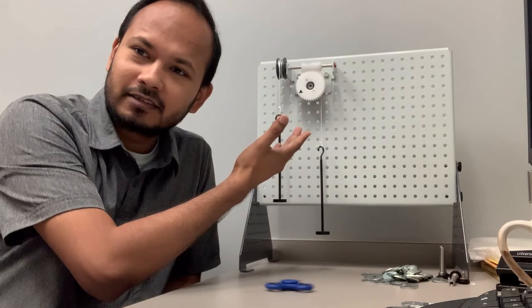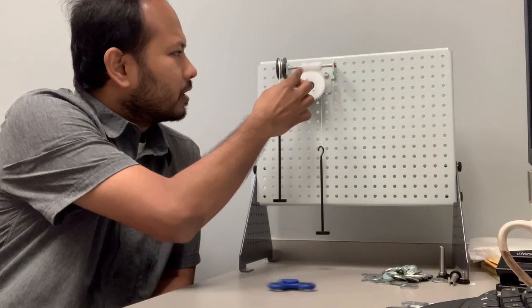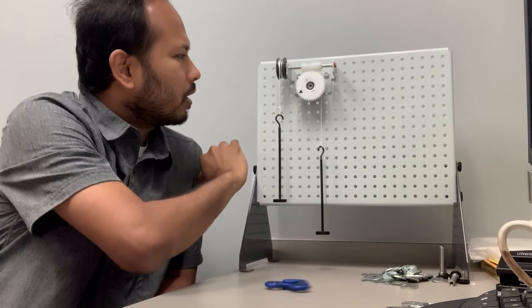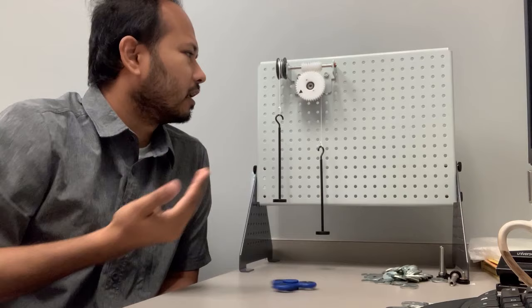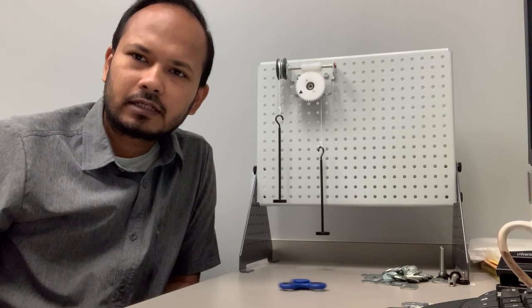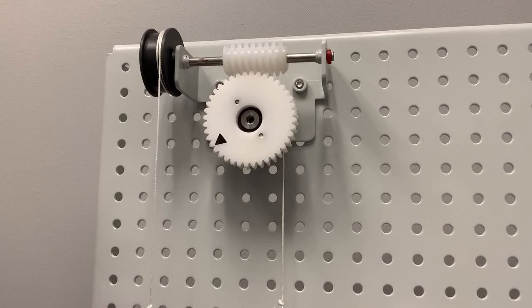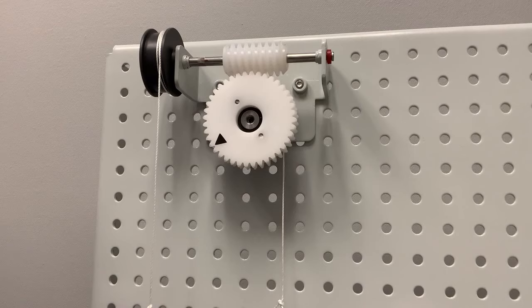So today we are going to talk about worm gears. What is a worm drive? In a worm drive, a worm gear in the shaft has a screw type thread and the power is transferred from one shaft to another which is at a different angle, usually at 90 degree angle. Now let's look at our setup here.